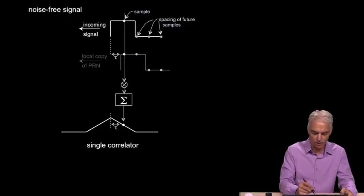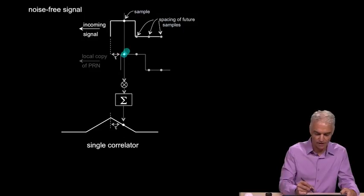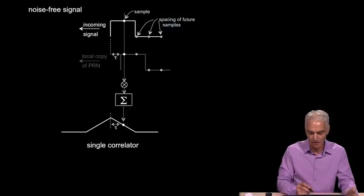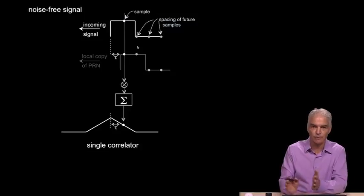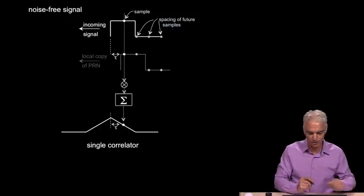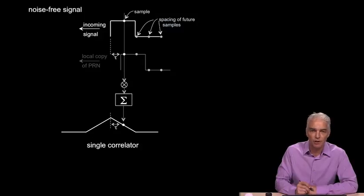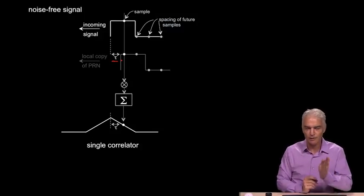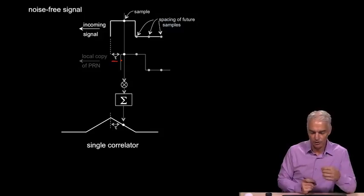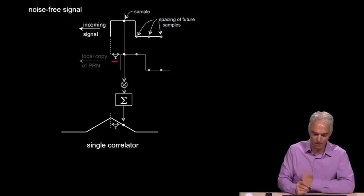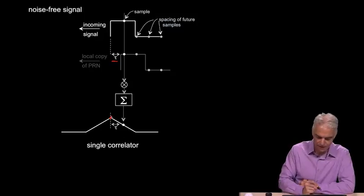So we generate our local copy there and multiply it by what we've sampled and added. In this case, it would be plus one times plus one would be plus one, and we'd get one coming out of the summer. A little bit later, we'd sample again as the signal slid from right to left and multiply and add and so on. The thing to take away from this slide is to notice that if we had our local copy perfectly aligned with the incoming signal, in other words if this tau value was zero, then every locally generated value of the code would match with the sampled value perfectly.